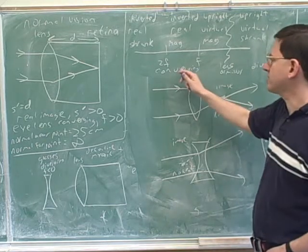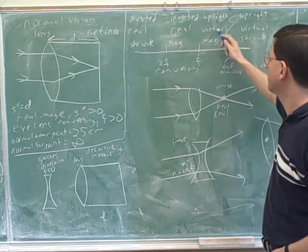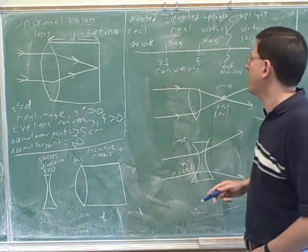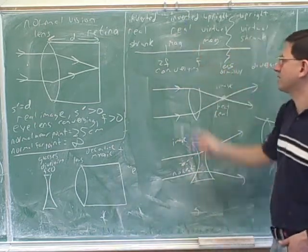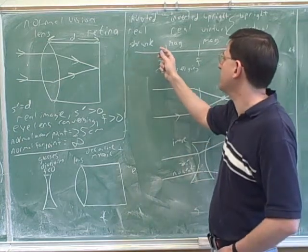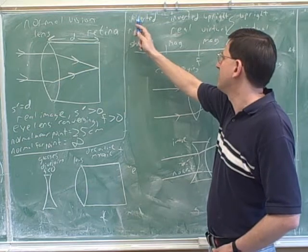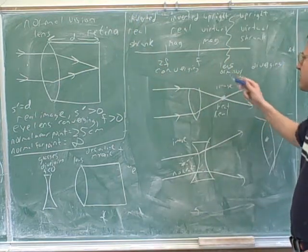But there's three different cases for a converging lens or mirror. If you put the object inside the focal length, the image is upright, virtual, and magnified. If you put the object between the focal length and twice the focal length, the image is inverted, real, and magnified. And for a converging lens or mirror, if you put the object outside twice the focal length, then the image is inverted, real, and shrunk. And again, this works for either lenses or mirrors.